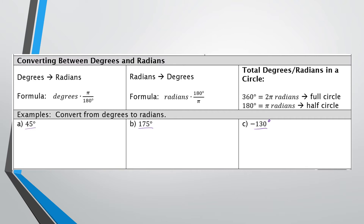A couple of things you need to know. A full circle going all the way around is 360 degrees, which equals 2π radians. Half a circle is 180 degrees, which equals π radians. Radian measurements always use pi, so that's one way to tell the difference: if it has the degree symbol, it's in degrees; if it has pi, it's in radians.